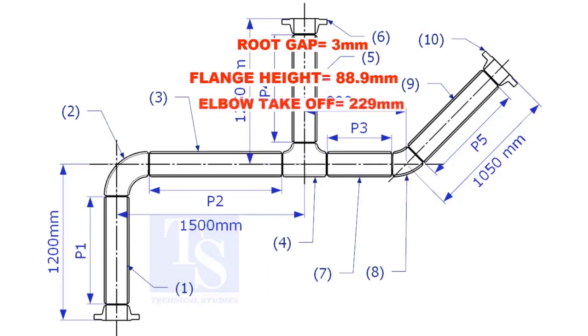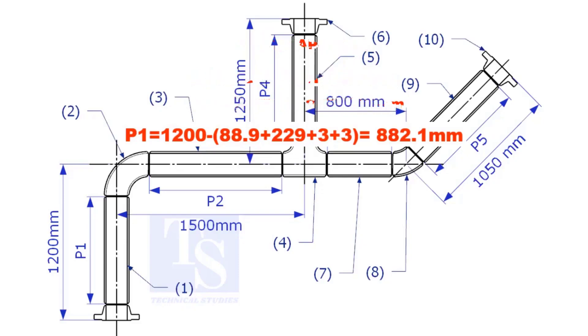Substitute the sum of the height of the flange, elbow takeoff, and 2 root gaps from the total length of 1500. Length of pipe P1 is 882.1mm.